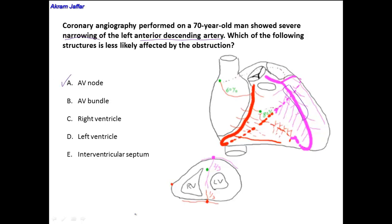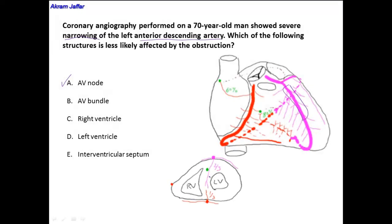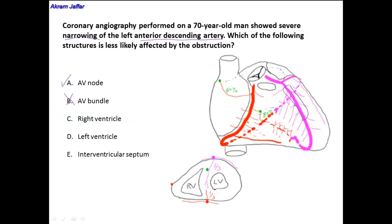Let's check the other options. The AV bundle is supplied by the anterior interventricular artery, which gives off septal branches that supply the anterior two-thirds of the interventricular septum, including the AV bundle — so the AV bundle will be affected. The right ventricle, although supplied mainly by the right coronary artery, also receives small ventricular branches from the anterior interventricular artery, so it will also be affected.